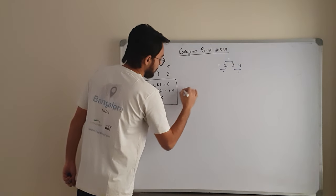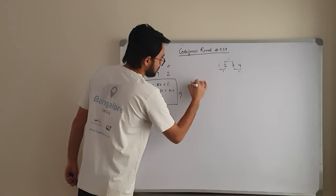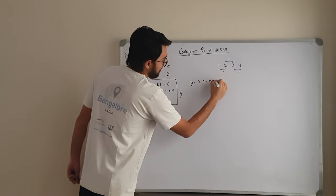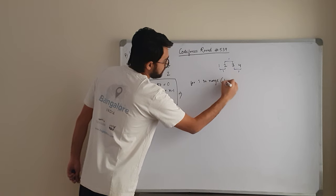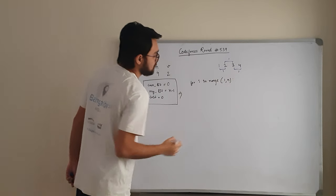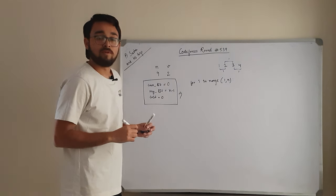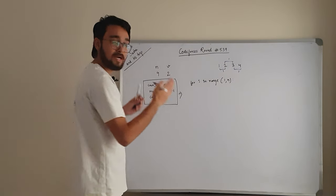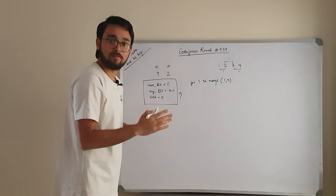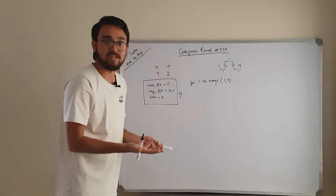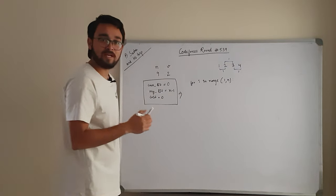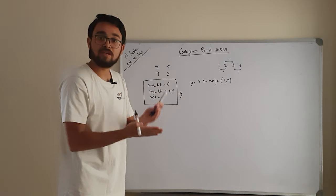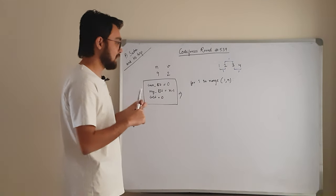We loop from 1 to N, specifically from 1 up to but not including N. When N is 4, we calculate for cities 1, 2, and 3 — because when we reach city 4 we have already arrived at the destination, so we don't need to calculate for it.